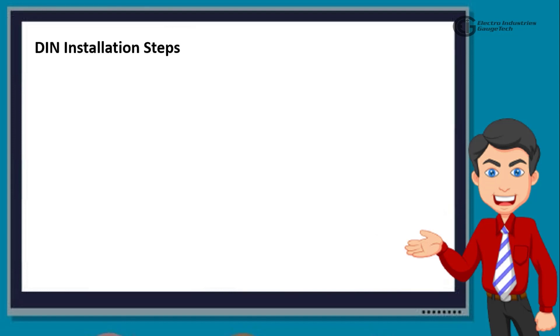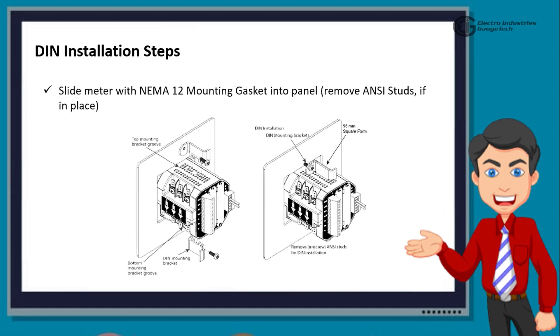After this, we have the DIN installation steps. The first step is slide meter with any M8-12 mounting gasket into panel. Remove ANSI studs if in place. Then, from back of panel, slide down mounting brackets into grooves in top and bottom of meter housing. Snap into place. Lastly, secure meter to panel by using a 2 Phillips screwdriver to tighten the screw on each of the two mounting brackets. Do not over-tighten. The maximum installation torque is 0.4 Newton meter.